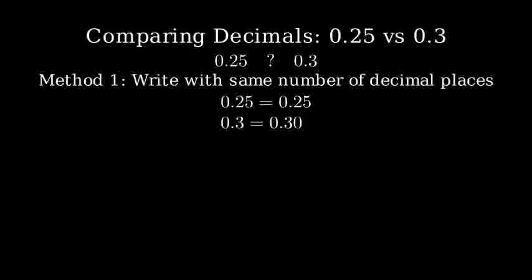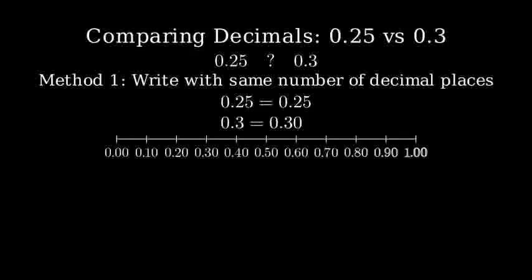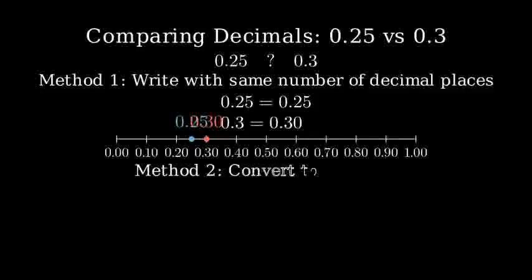Let's visualize these numbers on a number line. Here's 0.25, and here's 0.3. We can clearly see that 0.3 is further right on the number line, meaning it's greater. Let's also compare these numbers using their fractional representations.